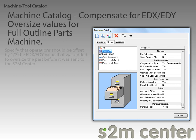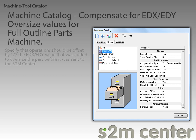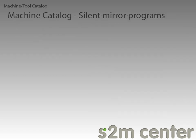This allows us to specify that operations should be offset by one half the EDX or EDY value that was added to oversize the part before it was sent to the S2M Center. The final new machine catalog feature is the silent mirror programs feature. Because of the difficulty that can arise with lining up shaped parts along a drill and dowel fence, we now create mirrored programs for programs that are generated, which can help with those alignment issues.